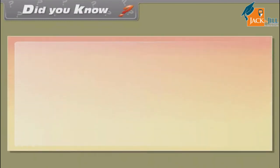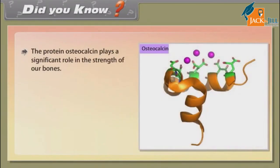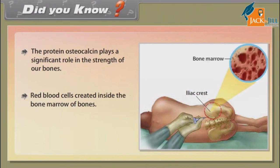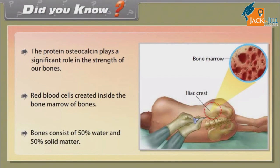Did you know? The protein osteocalcin plays a significant role in the strength of our bones. Red blood cells are created inside the bone marrow of bones. Bones consist of 50% water and 50% solid matter.